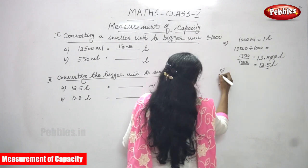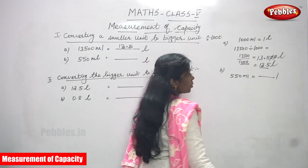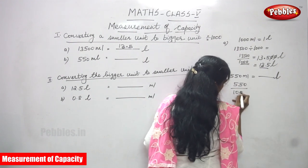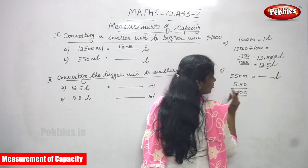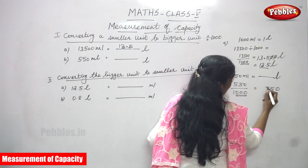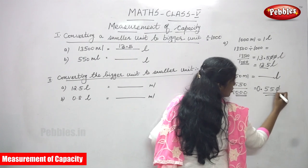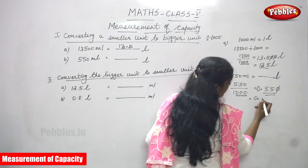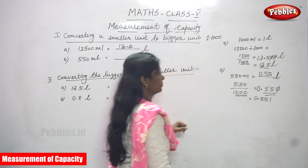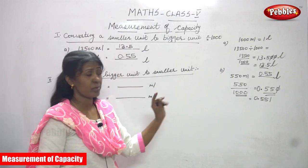The second question: five hundred and fifty ml is equal to how much liter? Five hundred and fifty divided by one thousand — there are three zeros, so move three decimal places to the left. You get zero point five five. After the point the leading zero is added before the decimal. The answer is zero point five five liter.